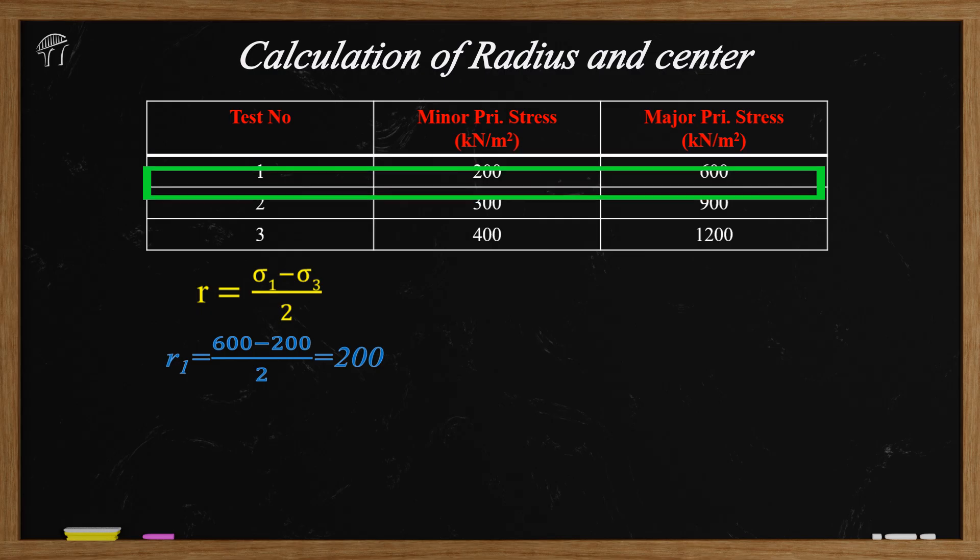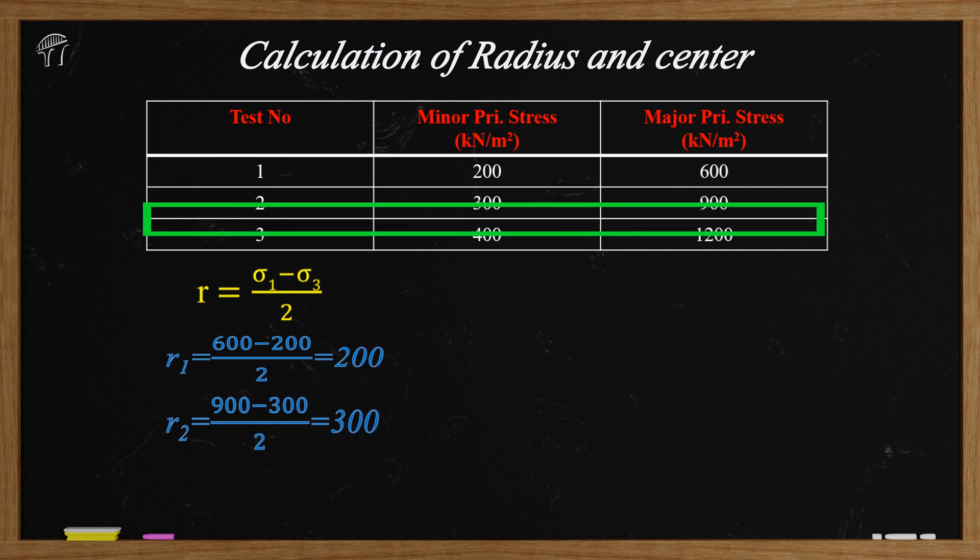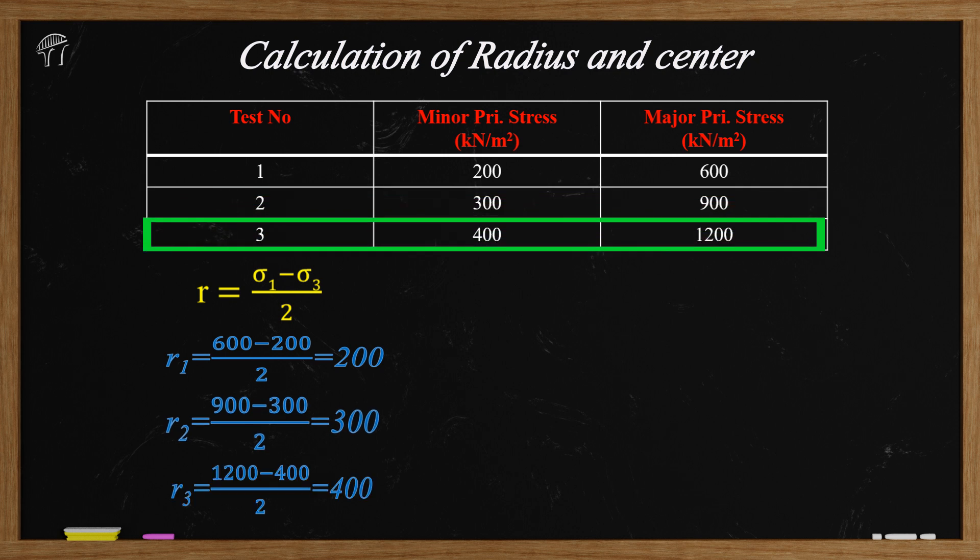Similarly, radius of the second circle will be r2 equals 300 and radius of the third circle will be r3 equals 1200 minus 400 by 2 that is 400. This is how we can calculate the radius of each Mohr circle. It doesn't matter how many of them are given to us we can calculate by using this formula r equals sigma 1 minus sigma 3 by 2.